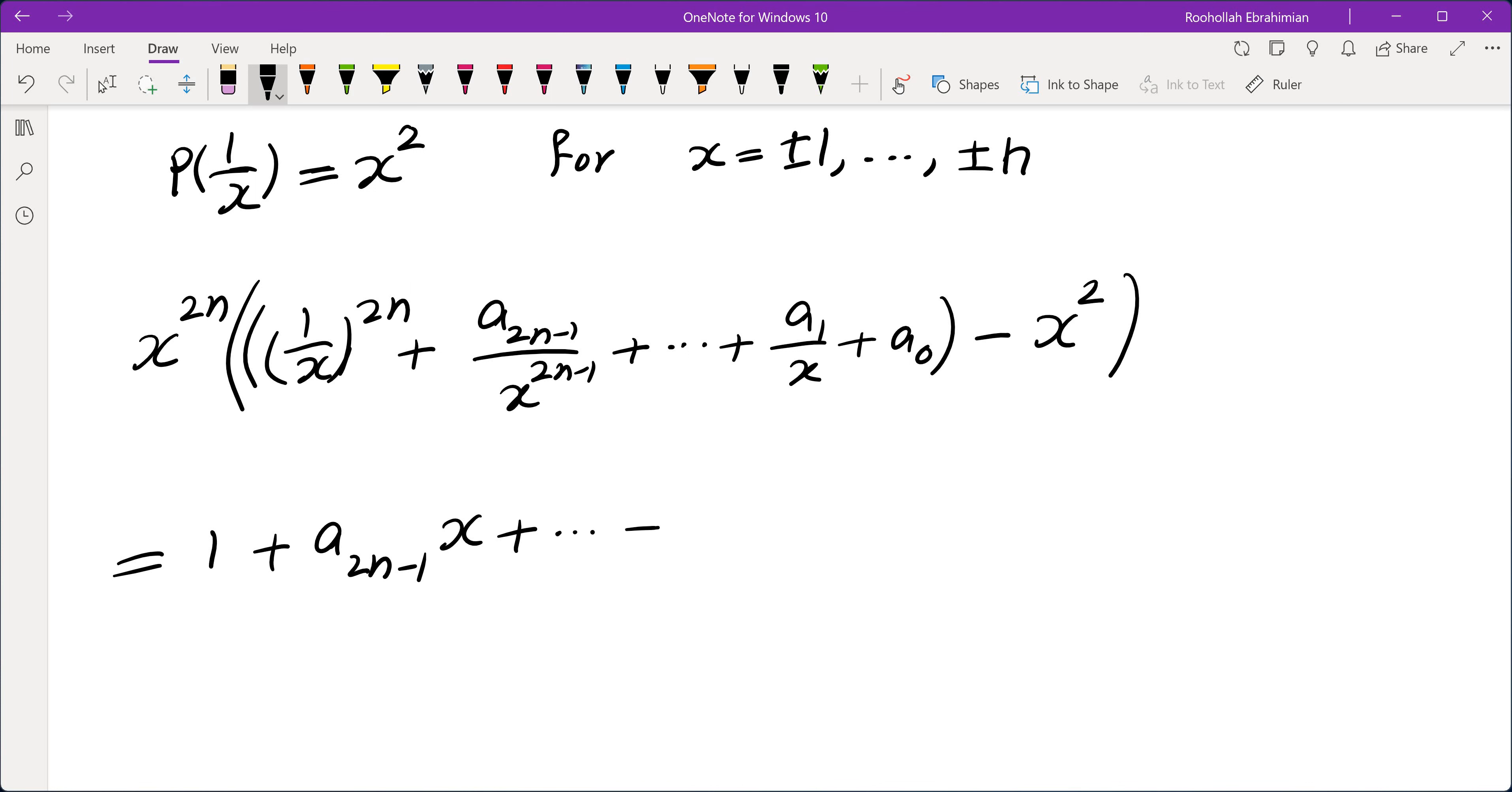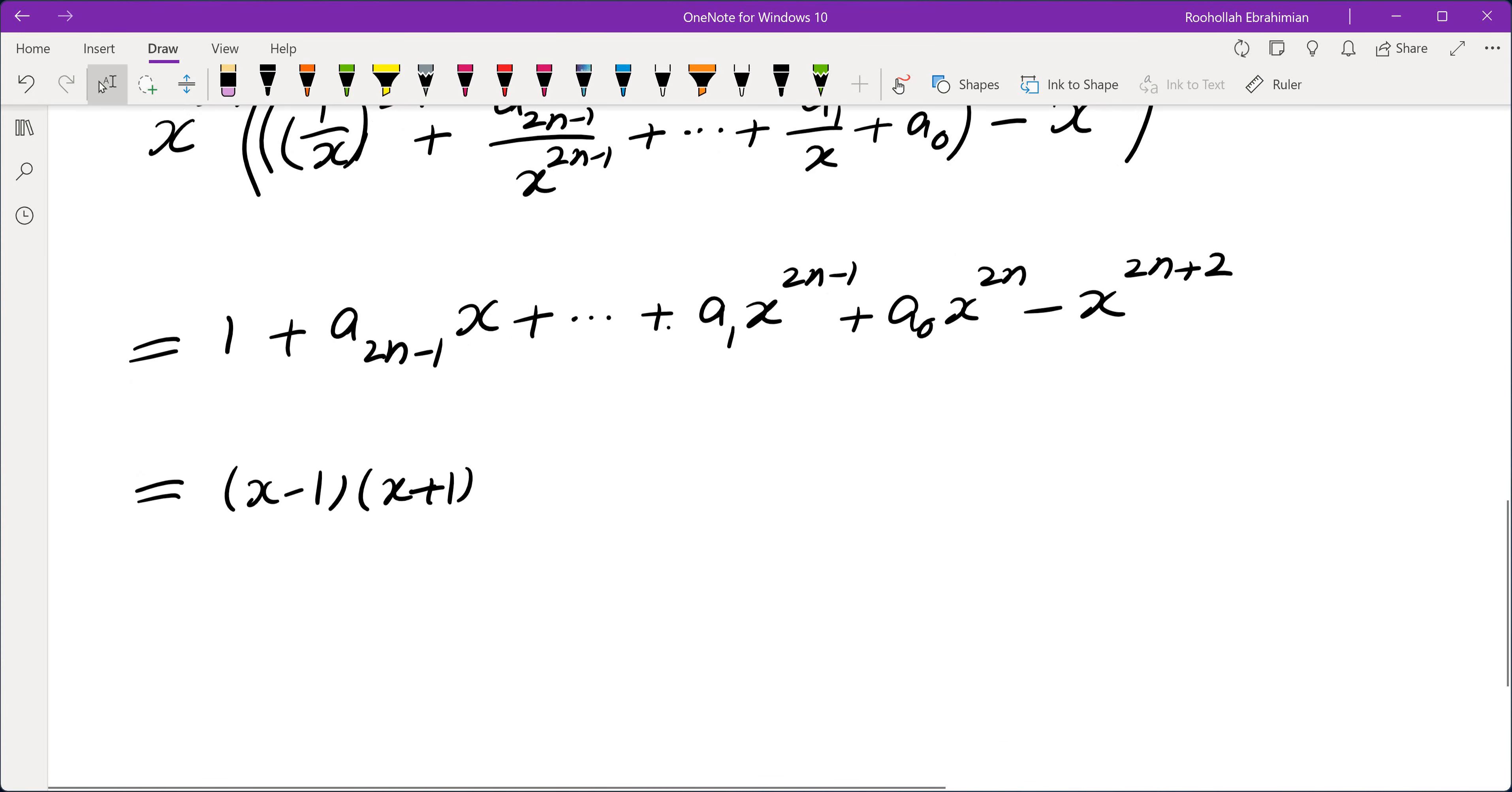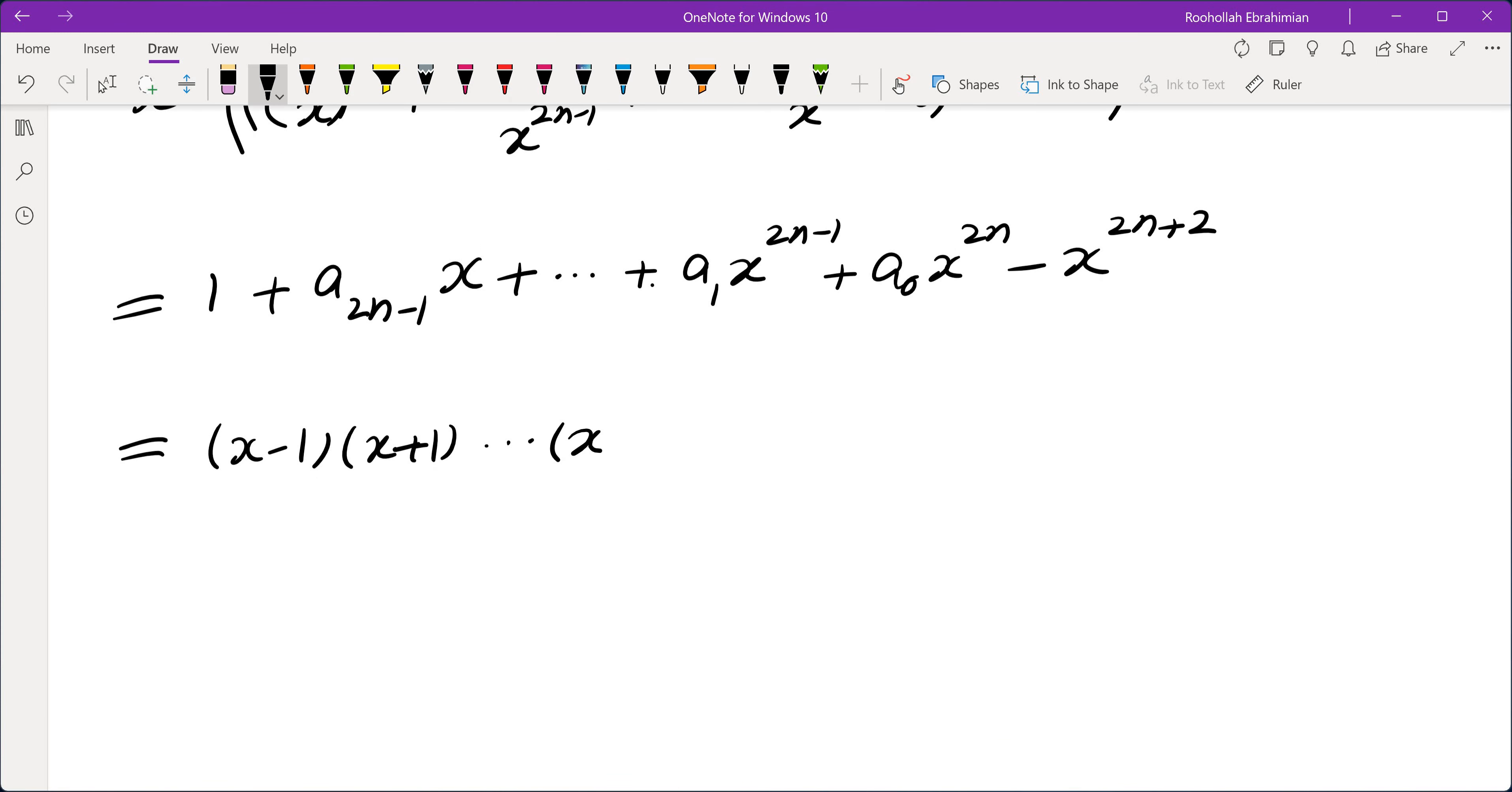We get 1 plus a_{2n-1} x, all the way to a_1 x to the power of 2n minus 1, plus a_0 x to the power of 2n, minus x to the power of 2n plus 2. This polynomial has 2n roots. What are they? They are plus minus 1, which means we have a factor of x minus 1 times x plus 1, and plus minus 2, all the way to plus minus n. But this has degree 2n. This side has degree 2n plus 2, which means we have a quadratic left.